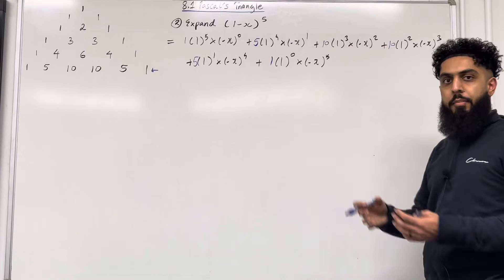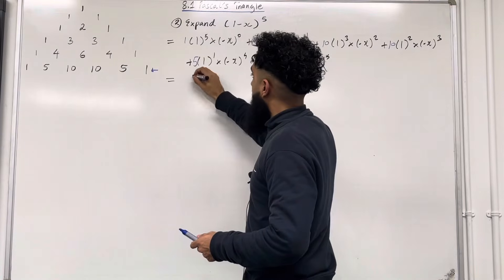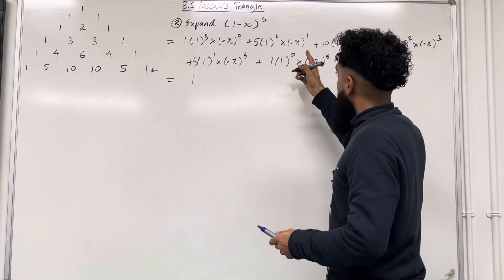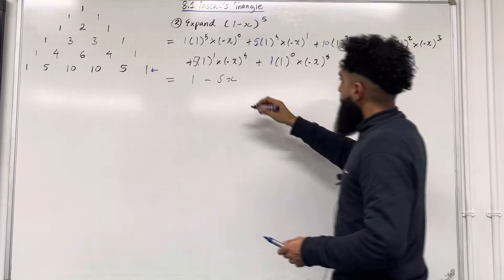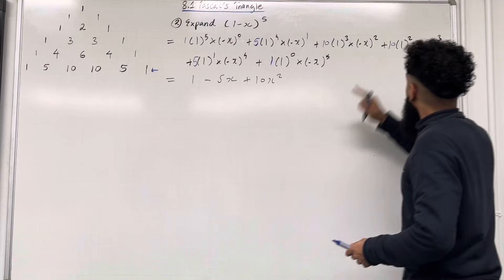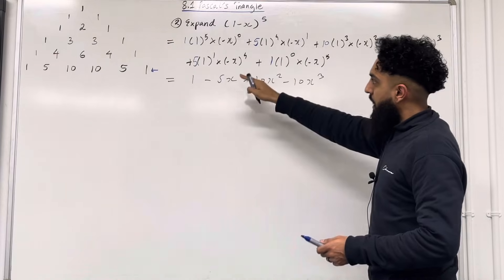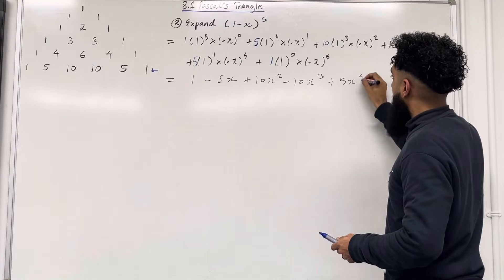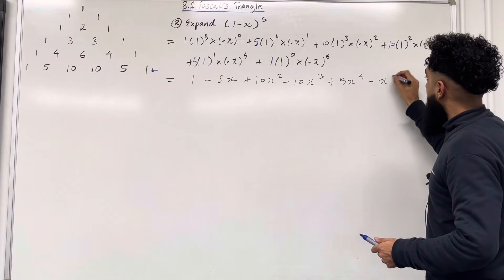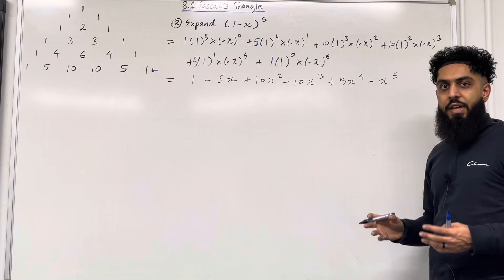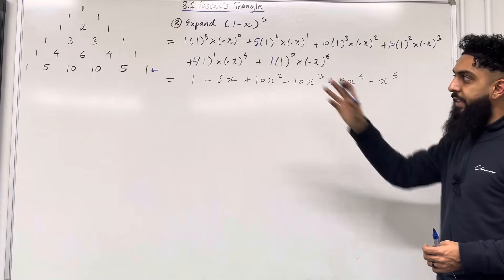Now I can simplify each term. The 1st term becomes 1. The 2nd term becomes −5x. The 3rd term becomes +10x². The 4th term becomes −10x³. The 5th term becomes +5x⁴. And the 6th term becomes −x⁵. And that is the expansion of (1 − x)⁵ using Pascal's Triangle.